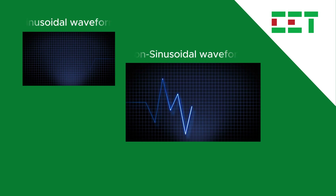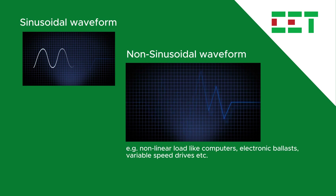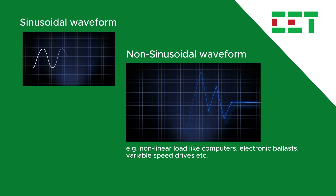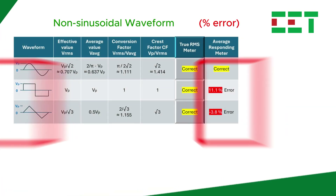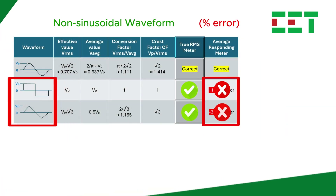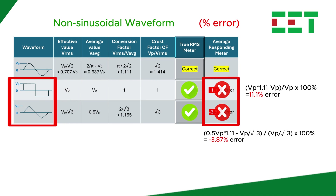However, what happens when non-sinusoidal waveforms are to be measured, especially when a non-linear load containing semiconductors, computers, variable speed motor drives, etc. is present? The average responding meter using the same conversion factor will produce error readings under different non-sinusoidal waveforms, as shown in the table.